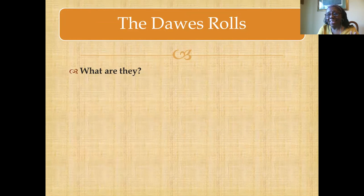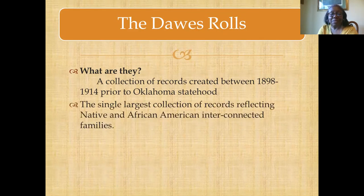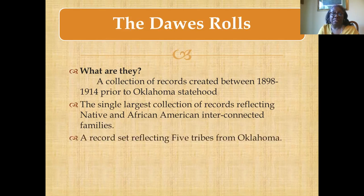So what are they exactly? They are a collection of records between 1898 and 1914. They began prior to Oklahoma statehood and ended seven years after Oklahoma statehood. It's the single largest collection of records that will reflect Native and African American interconnected families. No other set of records is this extensive, and these records reflect the five tribes from Indian Territory.